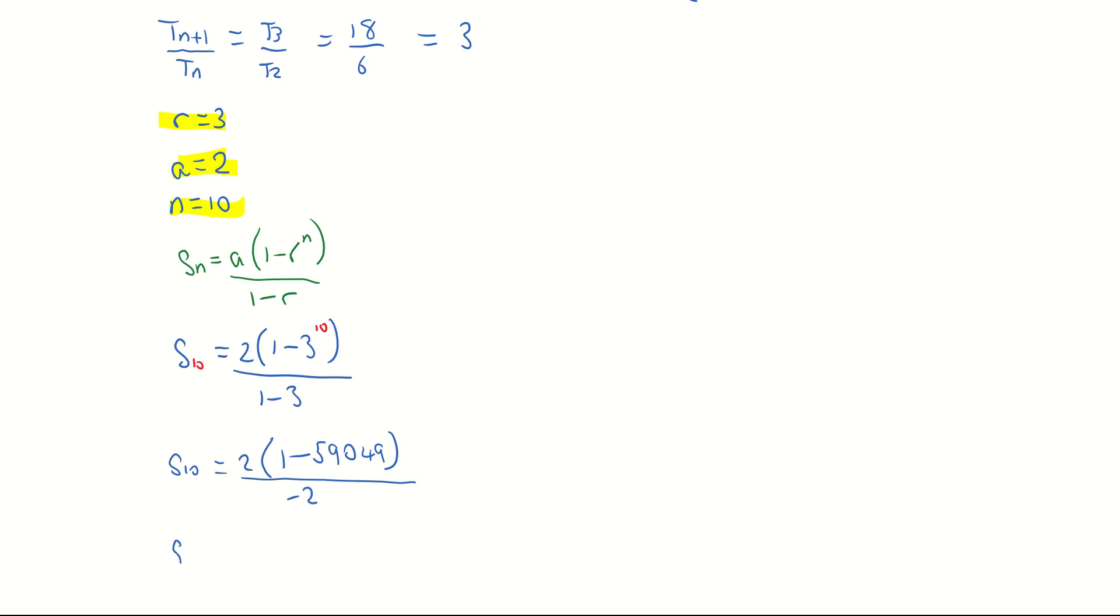So multiplying out the top line, 2 times 1 minus 59,049 is going to give me negative 118,096.